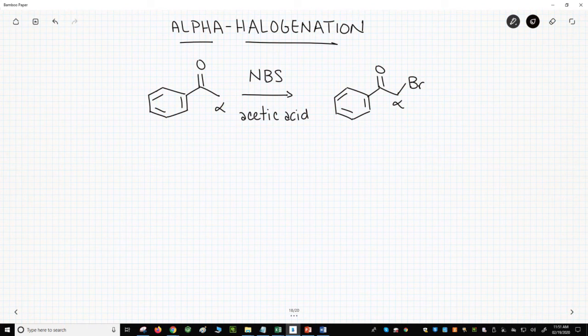When you see groups added to the alpha carbon of a carbonyl, you might think of using enolates. That's a great idea, but actually, this reaction works best with enols. That's why there is acid in this reaction. Acetic acid. Here is the structure of acetic acid to the left.